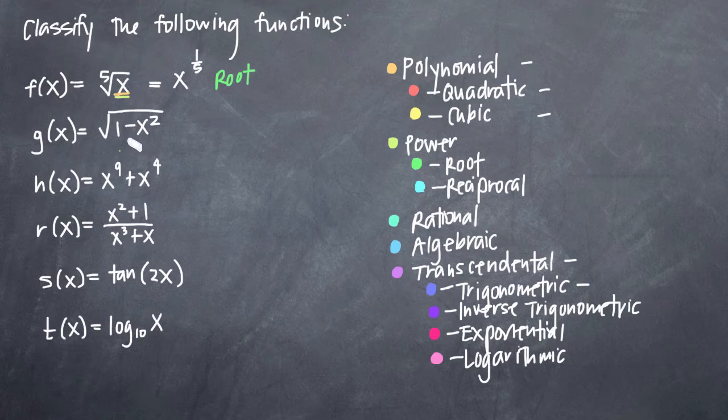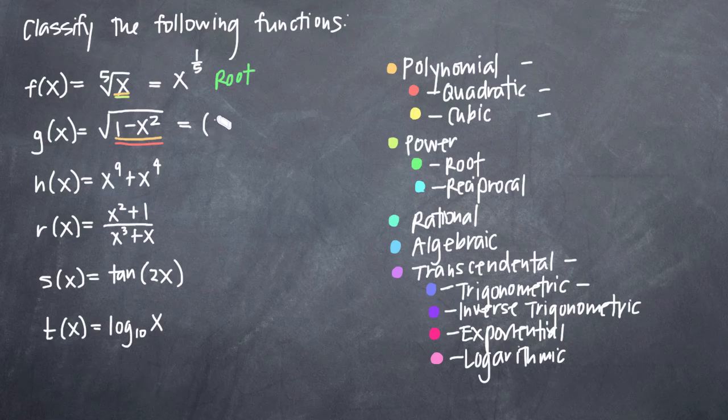Our function g of x is similar in the sense that we're still dealing with a square root sign. If we just look at what's inside the square root, we can see that one minus x squared is a polynomial function because our exponents here are non-negative integers. We could also get more specific and call this a quadratic function because the degree of our polynomial is two. But if we did that, we'd be ignoring the square root sign. We know that this is the same thing as the quantity one minus x squared to the one-half power.